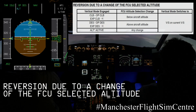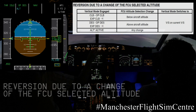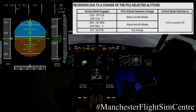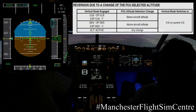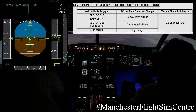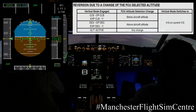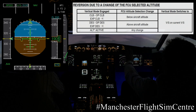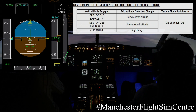Similarly in the descent, we're now in open descent mode descending to flight level 100. If we choose to change the FCU selected altitude to a higher flight level — in this case flight level 200, which is above the aircraft — it's clearly unrealistic to descend to a flight level above the aircraft. It reverts to vertical speed mode at the vertical speed when the mode reversion happened.